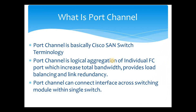Port channel is basically a Cisco SAN switch terminology — other vendors call it different names. Port channel is a logical aggregation of individual FC ports which increases total bandwidth, provides load balancing, and link redundancy. For example, if we have four ports and do a logical aggregation, if a single port is 8 Gbps then the total aggregation becomes 32 Gbps.